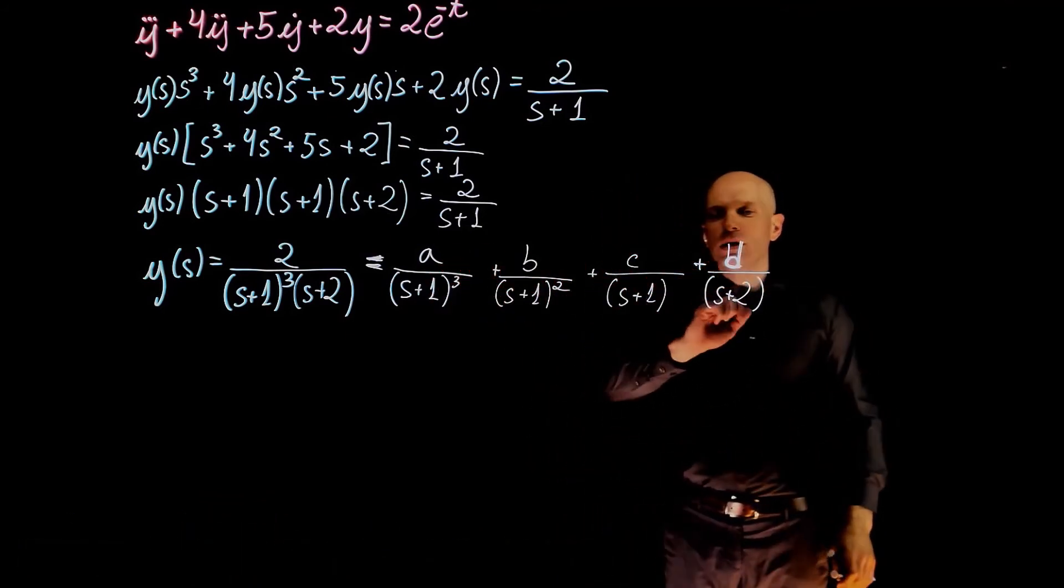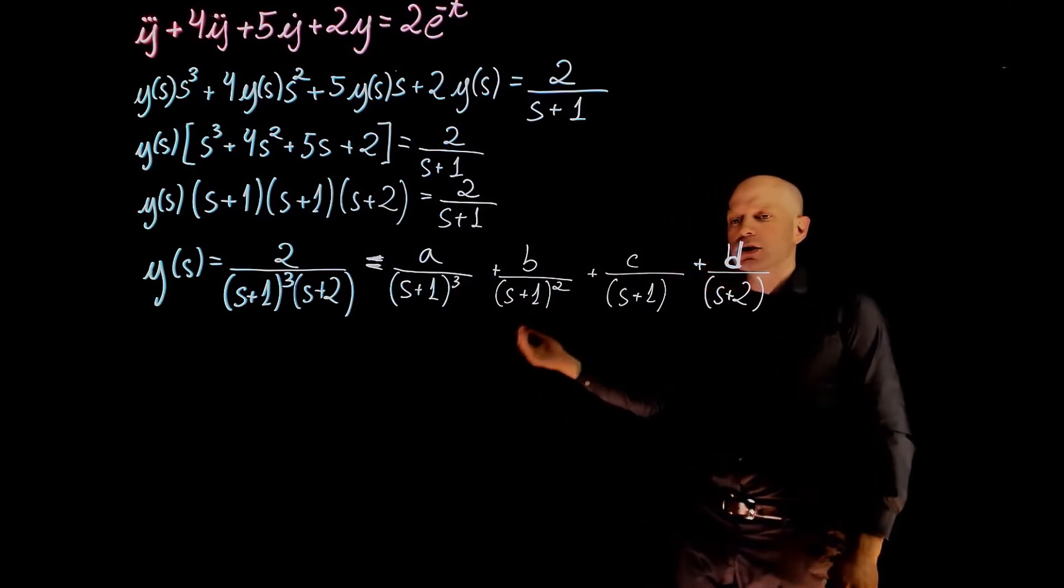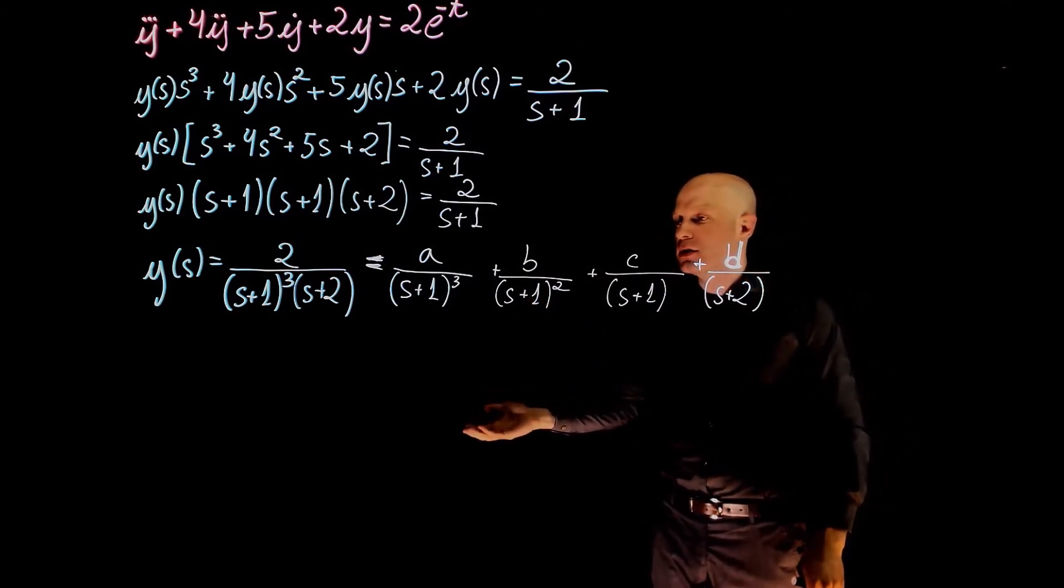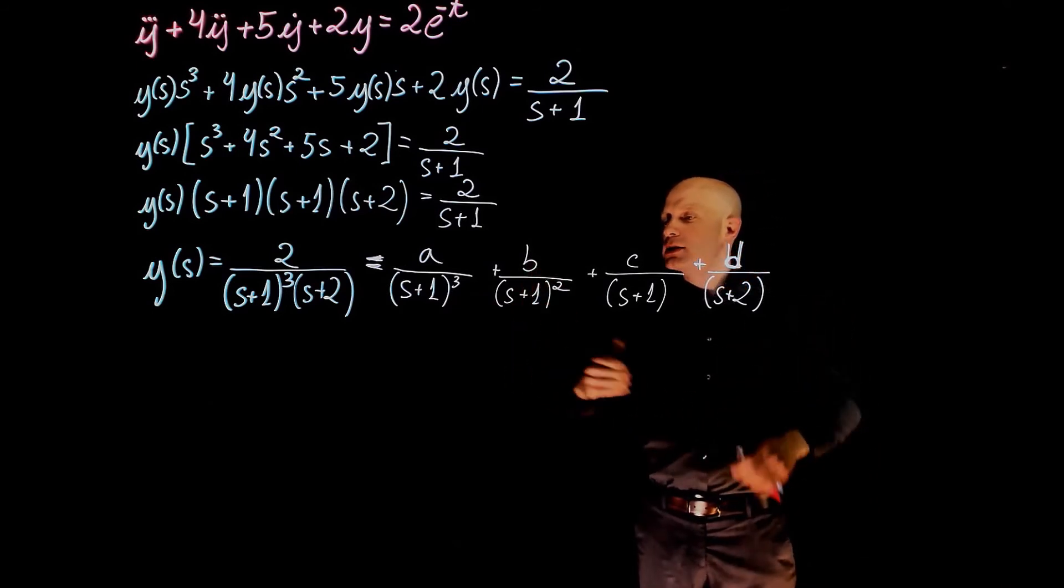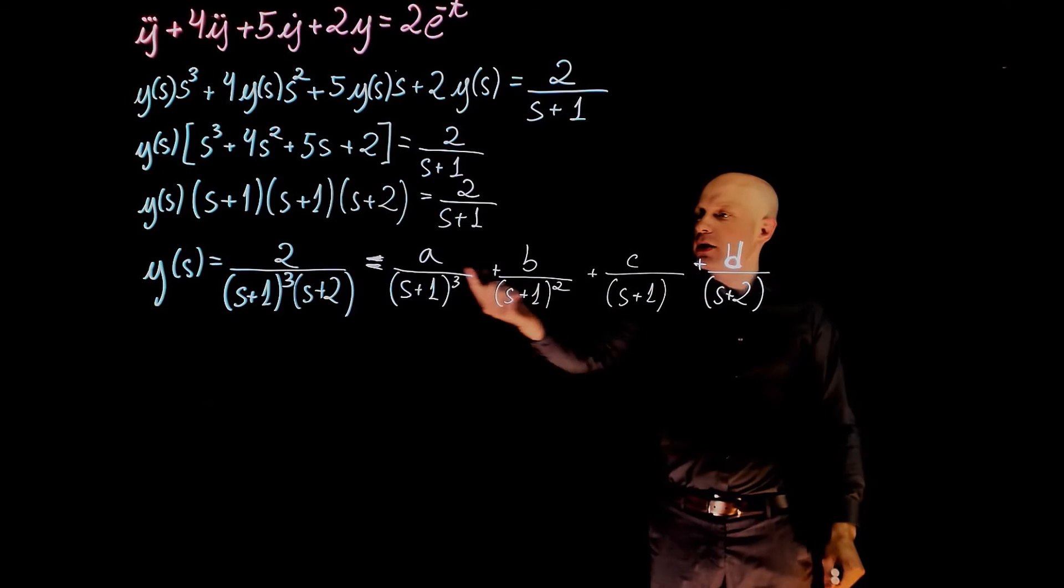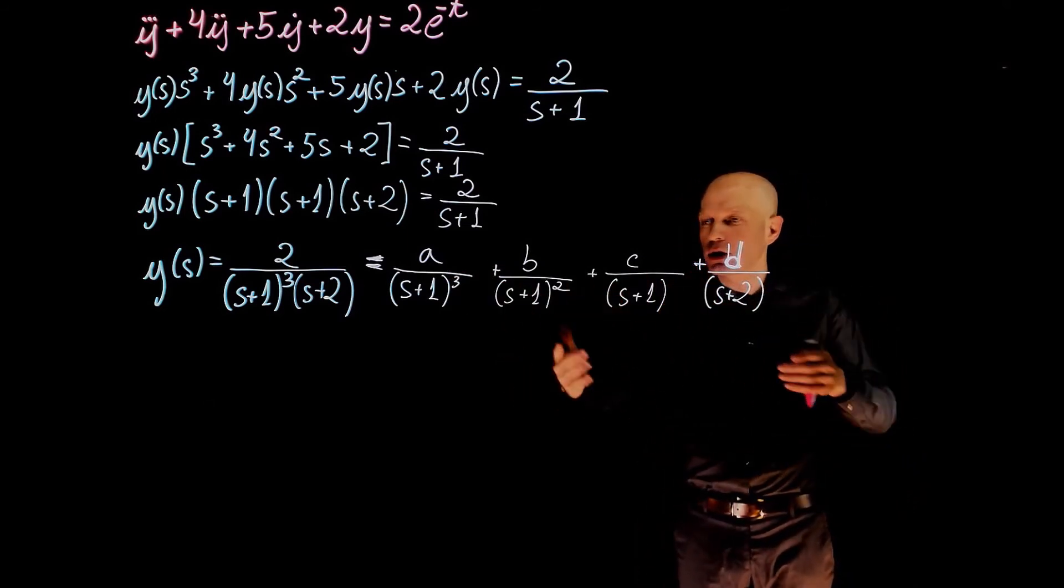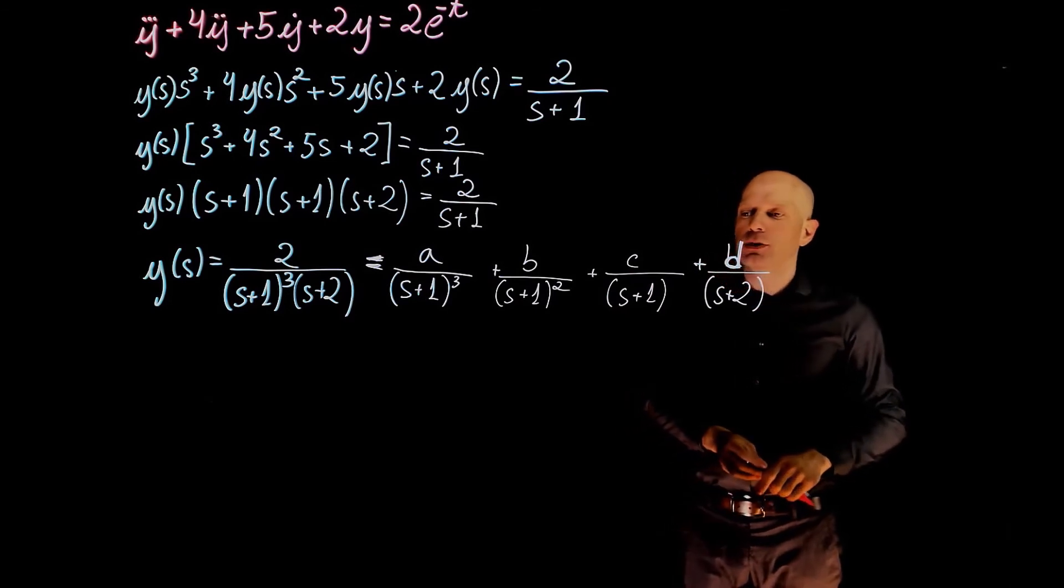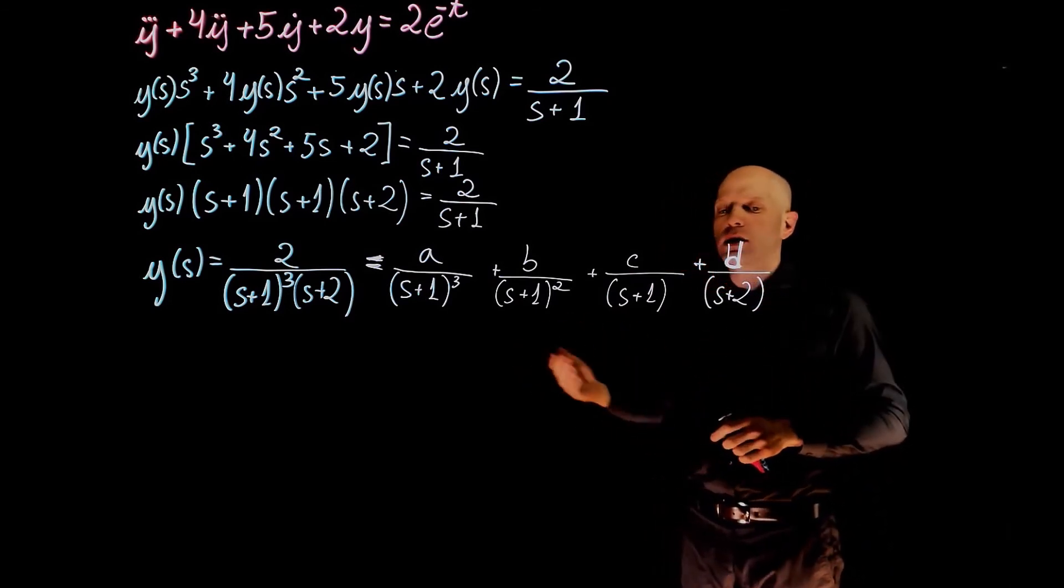Now we need to find a, b, c, and d. The process of finding these coefficients is exactly the same as outlined in the last exercise. Find the common denominator here, create the system of four equations and find a, b, c, and d. I'm going to skip that part because this would be quite long given that we have a third-order polynomial here. But again, the process is exactly the same as in the last exercise.